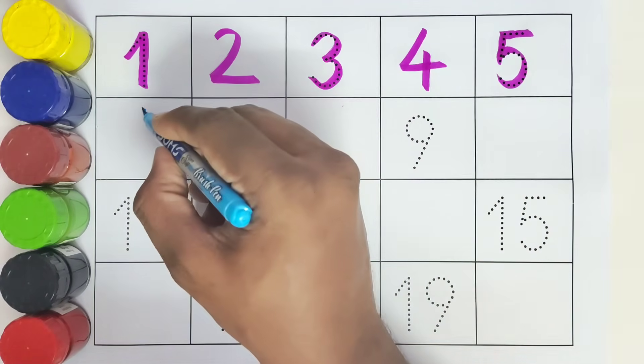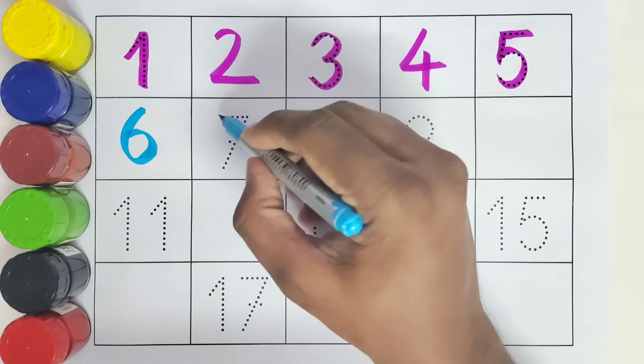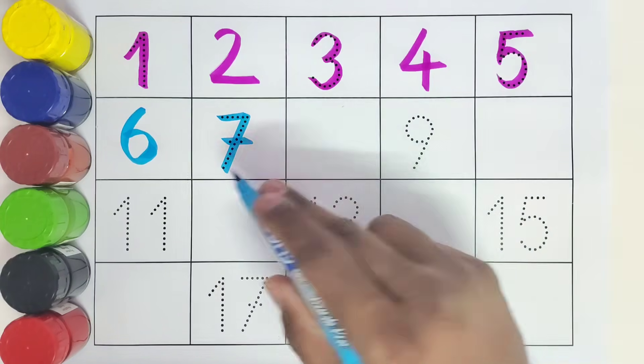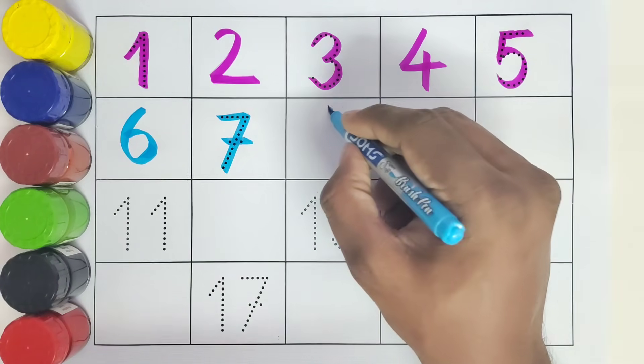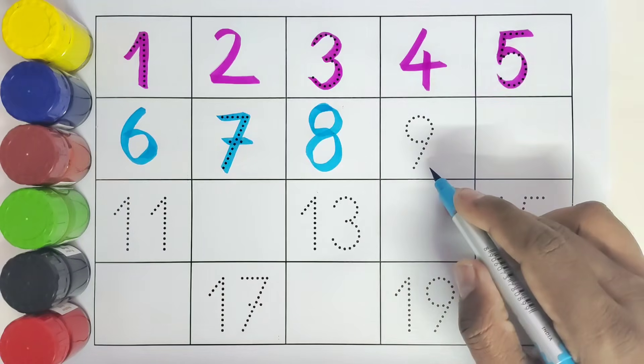What comes after 5? 6, number 6. This is 7, number 7. What comes after number 7? 8, number 8.